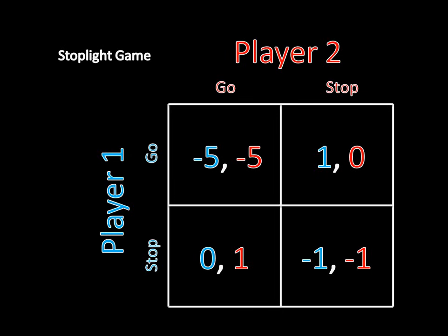Let's find out if it's a Nash equilibrium for the players to follow what the stoplight tells them. Suppose the stoplight tells player one to go and player two to stop. Is this outcome a Nash equilibrium? Yes. Player two is currently stopping — if she switches to going, she causes a car crash, which is bad for her. So she's content stopping while player one goes. Likewise, player one is going while player two stops, which is his best possible outcome. If he stops, it's unnecessary — he could reach his destination more quickly by going. So neither player wants to change strategy. This is a Nash equilibrium.